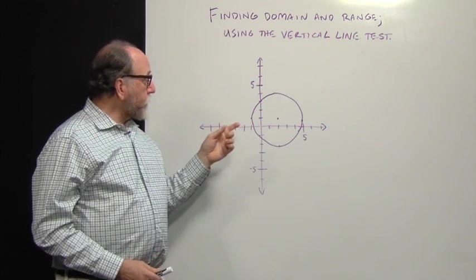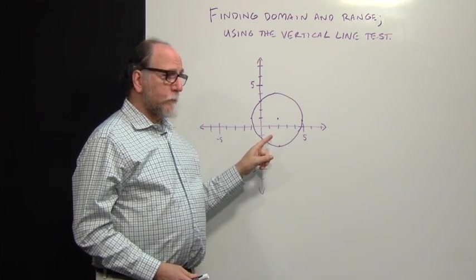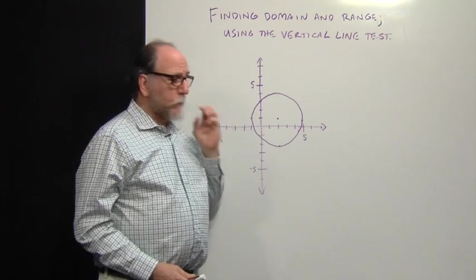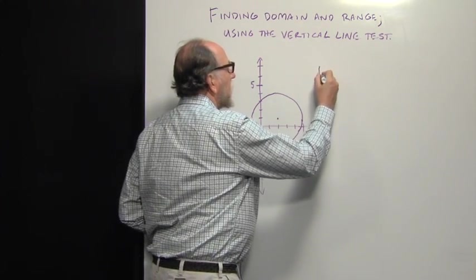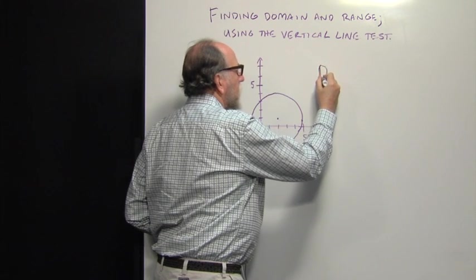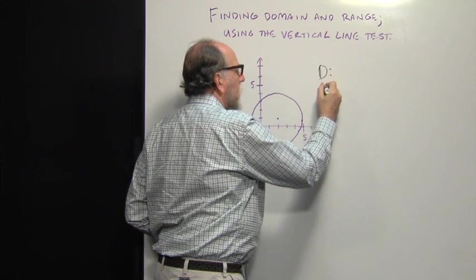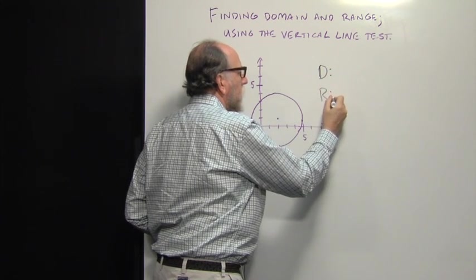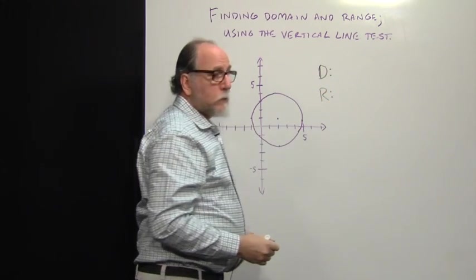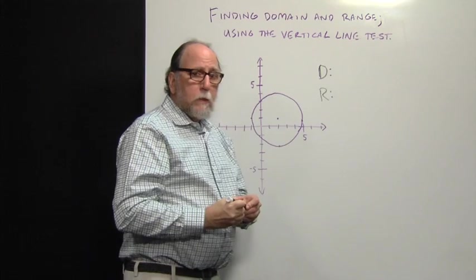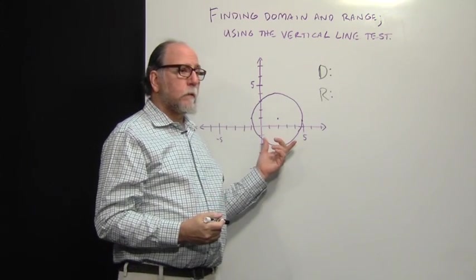So first, let's look at this relation. This is a graph of a circle. We can find its domain and range, and you just need to write D colon R colon and put the interval notation for those sets of numbers that this graph covers.